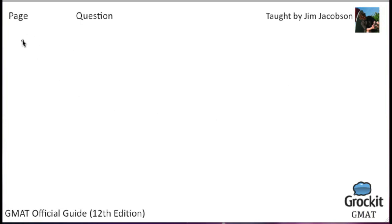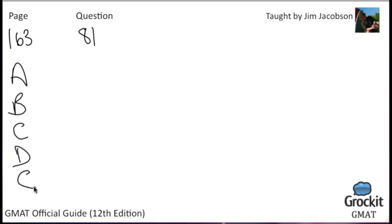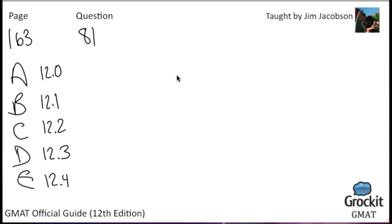Question 81 on page 163. Answer choices: 12.0, 12.1, 12.2, 12.3, and 12.4. The problem: data for a biology experiment are given in a table. If the amount of bacteria increased by the same factor during each of two three-hour periods, how many grams were present at 4 p.m.? The table shows 10 grams at the start, x grams in the middle, and 14.4 grams at the end.